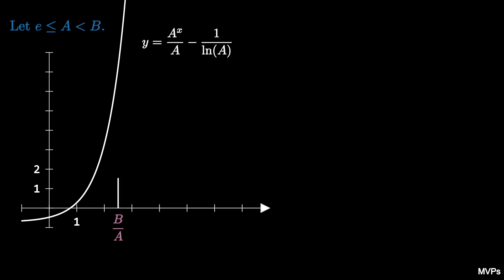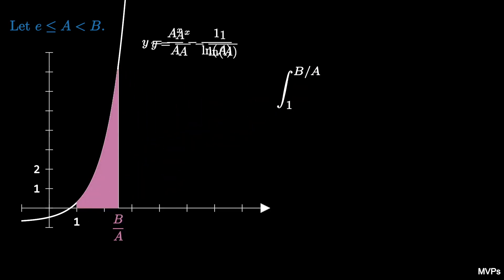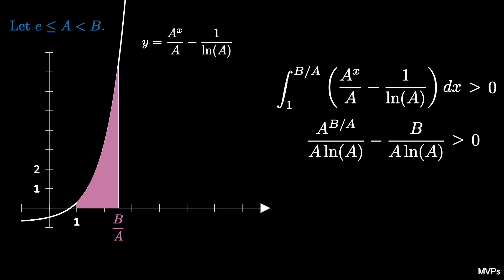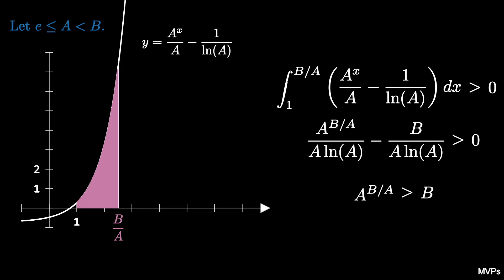Now consider the area between this curve and the x-axis from 1 to b over a, which is given by the integral from 1 to b over a of a to the x over a minus 1 over the natural log of a. This integral is positive because the area lies above the x-axis. Applying the fundamental theorem of calculus, we get that a to the b over a divided by a times the natural log of a minus b over a times the natural log of a is positive, so that a to the b over a is greater than b.